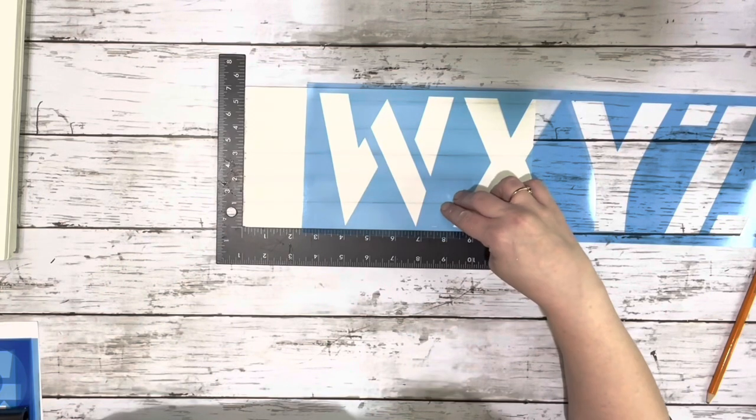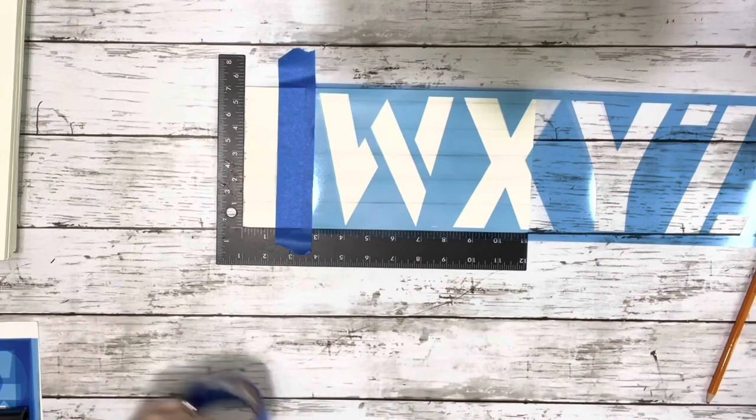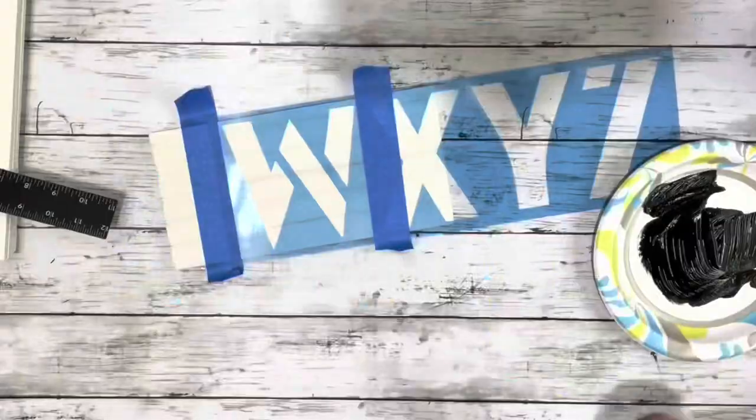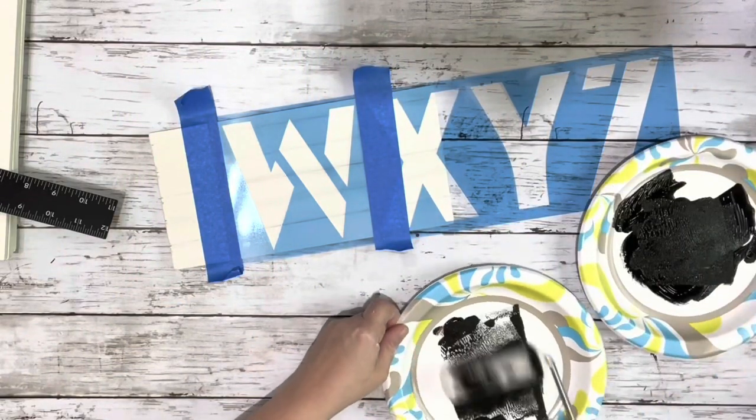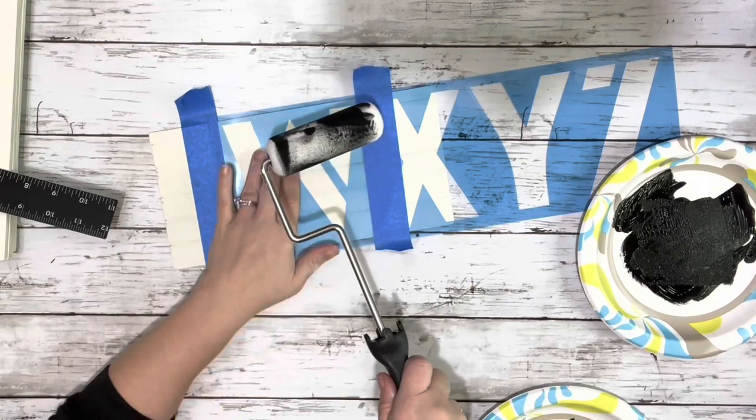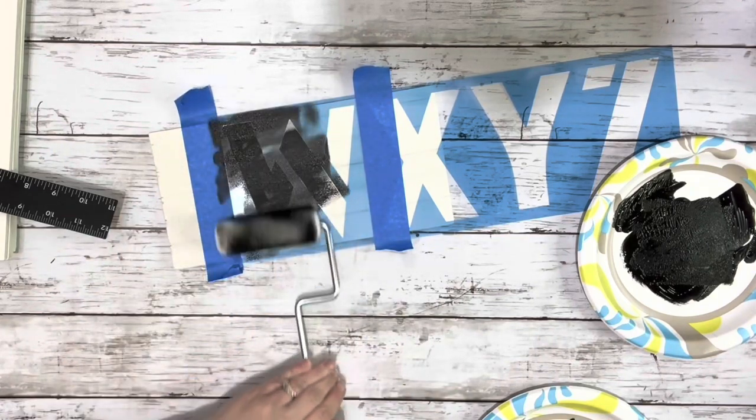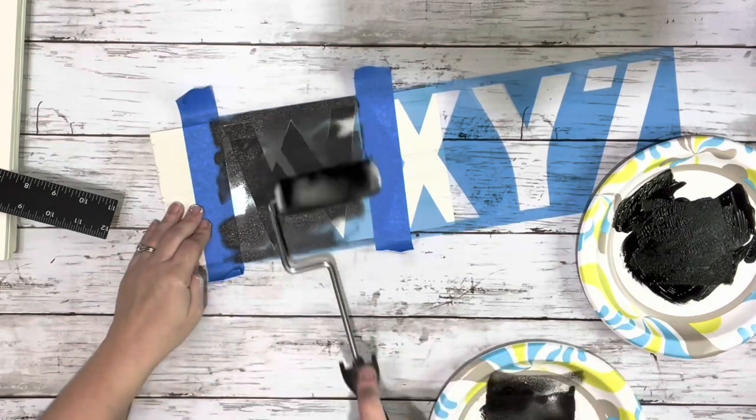And then once all those were done, I was spelling out the word welcome, so I just put a letter on each piece. I taped down the stencil, kind of centering it, and then used another paint roller with the black chalk paint. And just lightly rolled, put a tiniest bit on the roller, and roll it along each of the stencils.